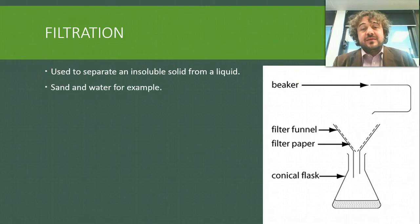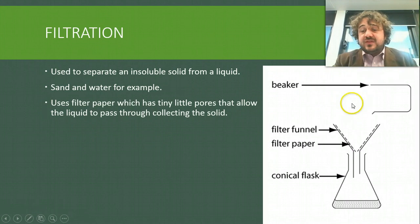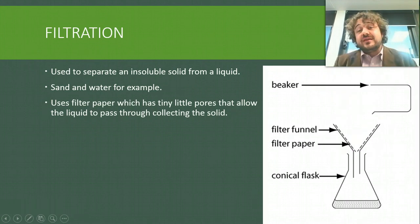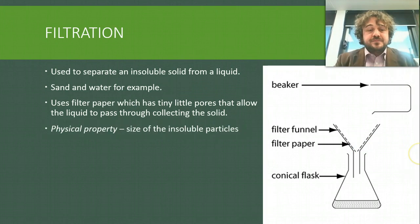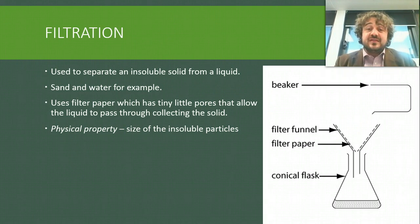A good example is sand and water — you can separate that by filtering. It uses filter paper, which has tiny little pores that allow the liquid to pass through and collect the solid. The physical property we use is size — the particles are too big to fit through the filter. This is the same as a sieve, so sieving and filtering are the same deal.